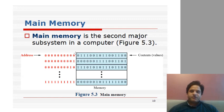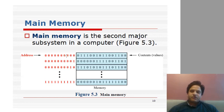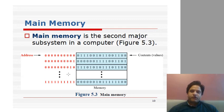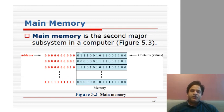An address specifies which particular word you want to extract, and also determines how many words you have. For example, if the address is 10 bits, we have 2 raised to power 10 = 1024 memory locations. If each memory location holds 2 bytes (16 bits), then total memory is 1024 × 2 = 2048 bytes.